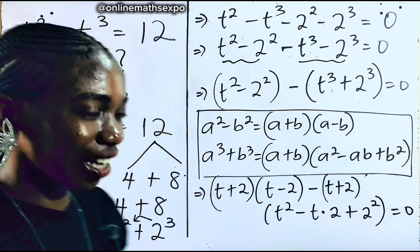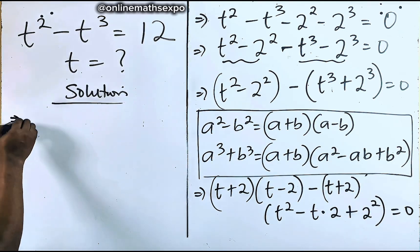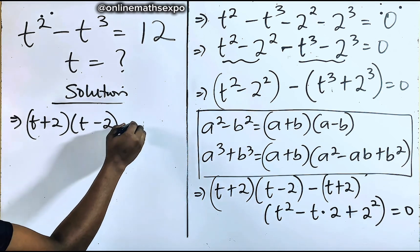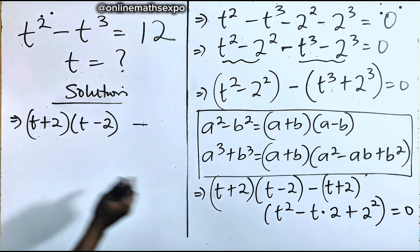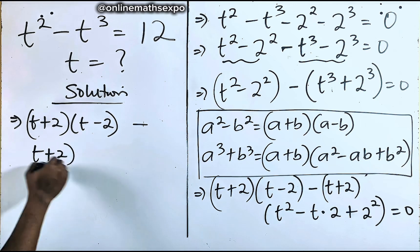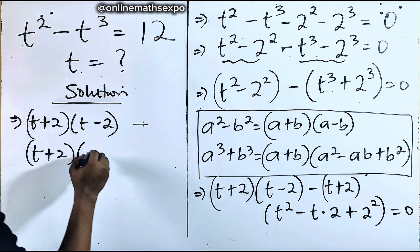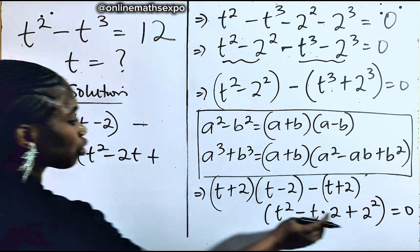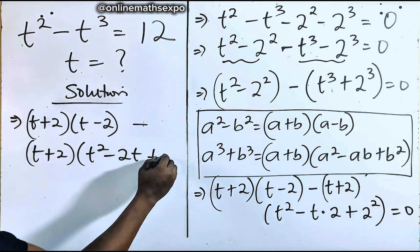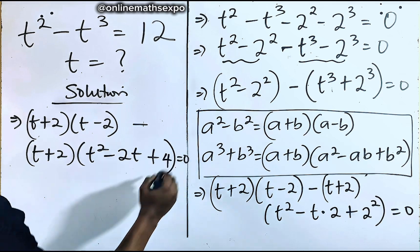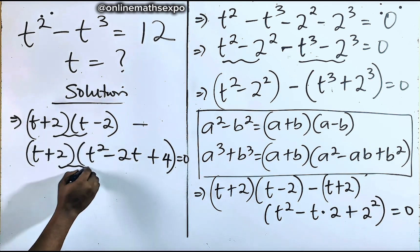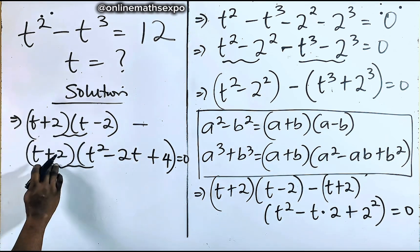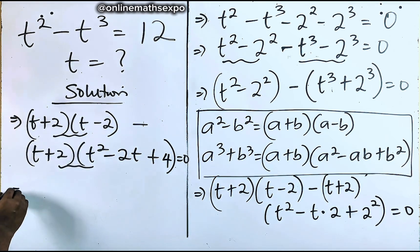We now have (t + 2)(t − 2) minus (t + 2)(t squared minus 2t plus 2 squared). Since 2 squared equals 4, we write this as (t + 2)(t − 2) minus (t + 2)(t squared minus 2t plus 4), equal to 0. Notice that (t + 2) is repeated, so we factor it out.